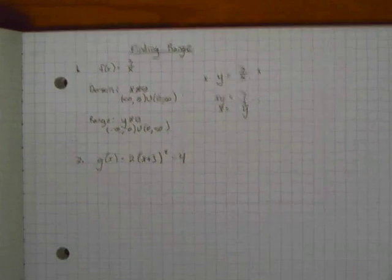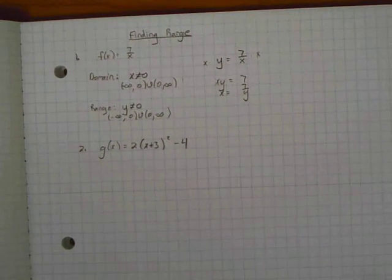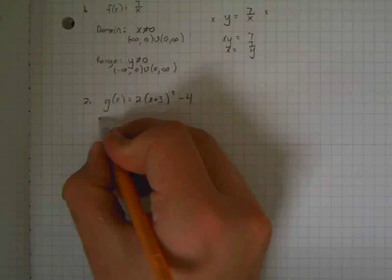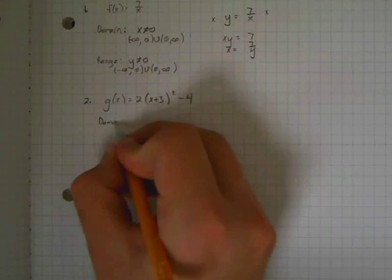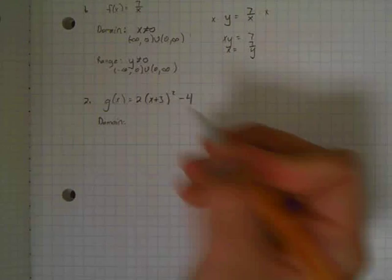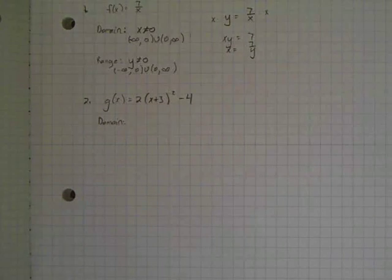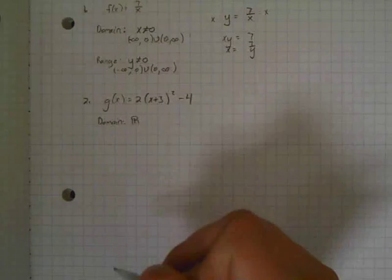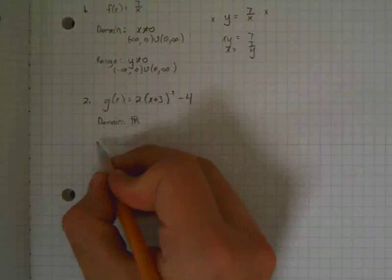So when finding the domain and range of this, I'm just going to think of the graph. First with the domain, there are no issues dividing by 0, and there are no issues with non-real answers because there's no square roots. So the domain of this is real easy, it's just all real numbers. Now the range.